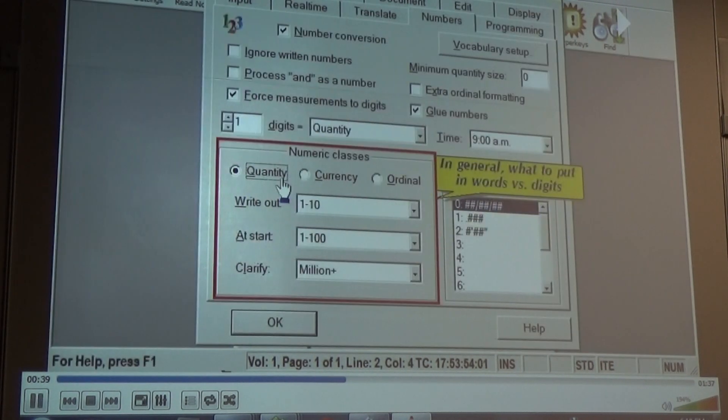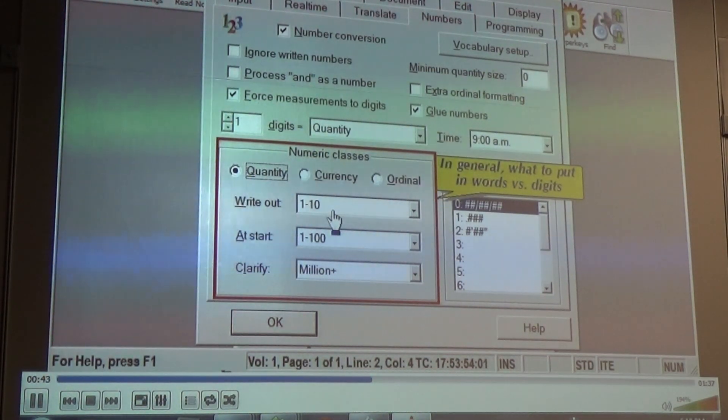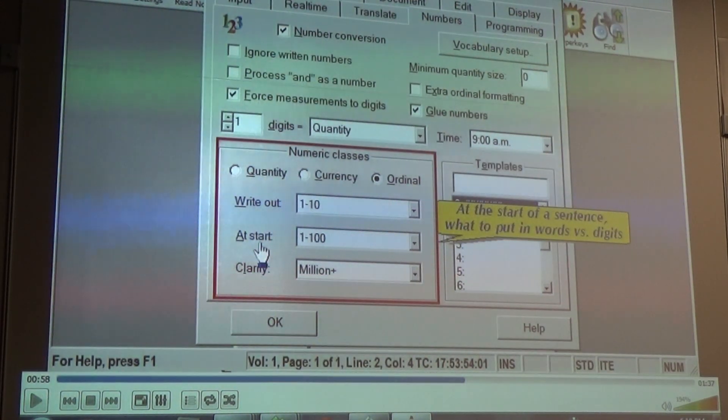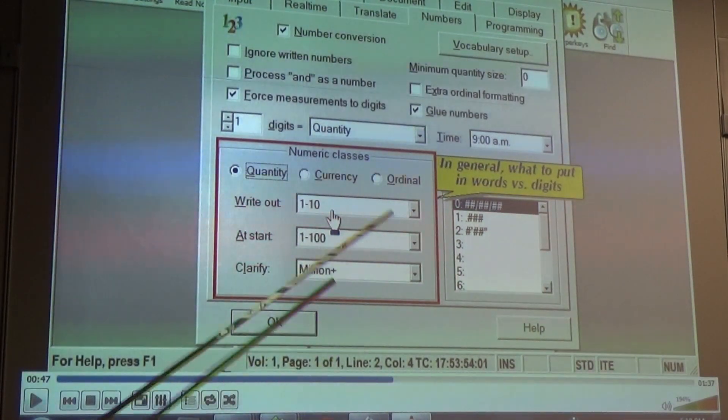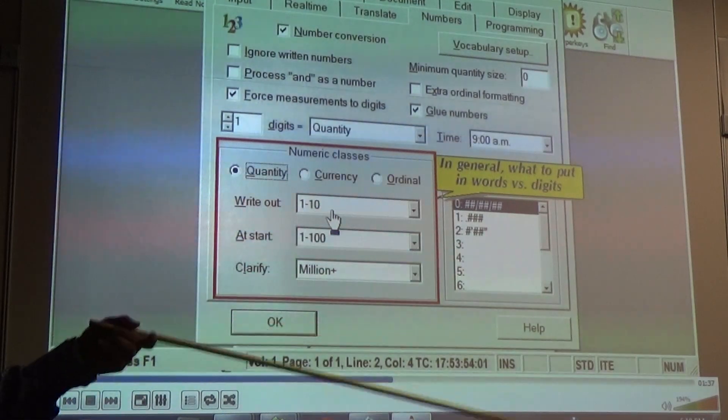For general quantity numbers, this user has Eclipse write out 1 through 10, but put 11 and above in digits. For currency, do not write out any numbers, just use digits. And for ordinals, write out first through 10th. There are different. You see that? You see what they're saying there? For quantity, this user has Eclipse write out 1 through 10, but put 11 and above in digits. You see what it's saying? Which, I don't do it. So mine are going to write out all of them. Because I can, for quantity, if I write the number, then I want the number. So you don't follow the rule, anything that's 10 or below is written out and works? No.